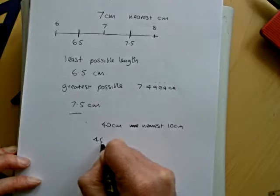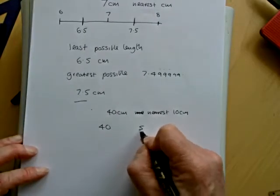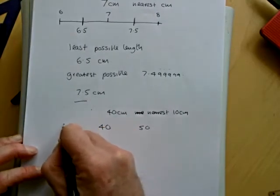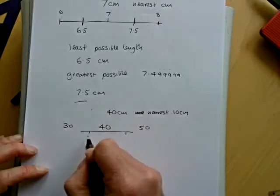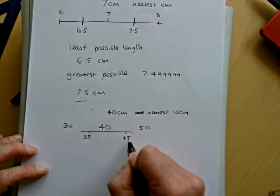So, again, if we look at 40, the nearest 10 centimeters above it is 50, below it is 30, so your halfway points will be at 35 and 45.